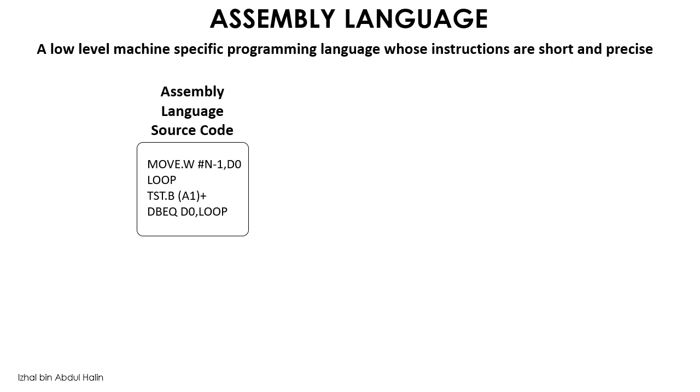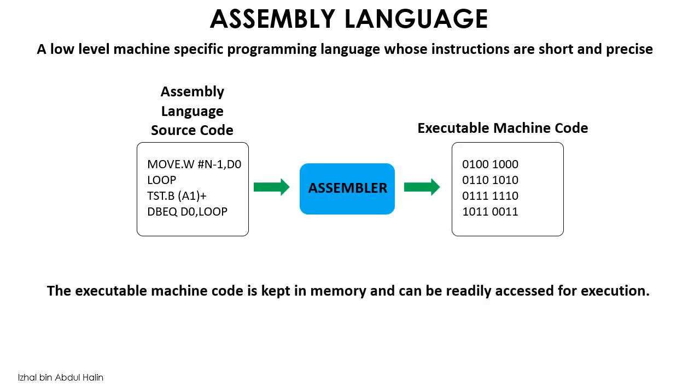Assembly language is machine specific. This means that a program written in assembly for the 68K microprocessor will not work on other models of microprocessors. Assembly language programs are translated directly to machine executable code by a utility program called the assembler. The executable machine code which is made entirely from binary bits is then stored in memory for execution. In contrast, high-level language programs such as C programs would have to be linked to libraries first, then compiled and finally translated to machine code.